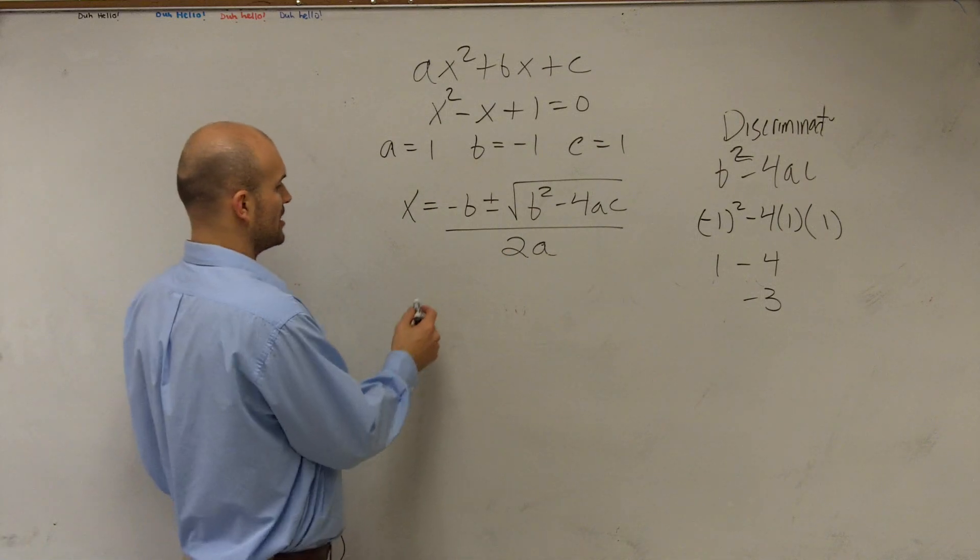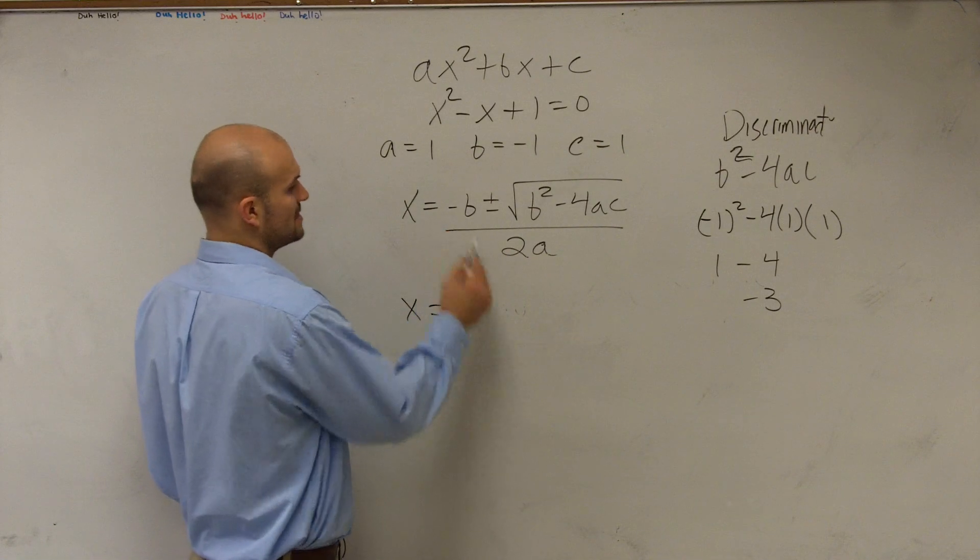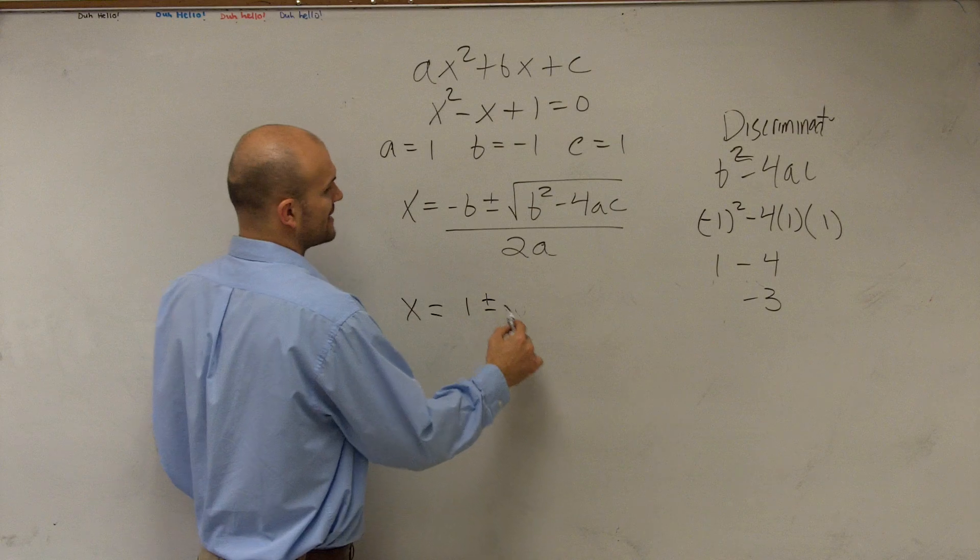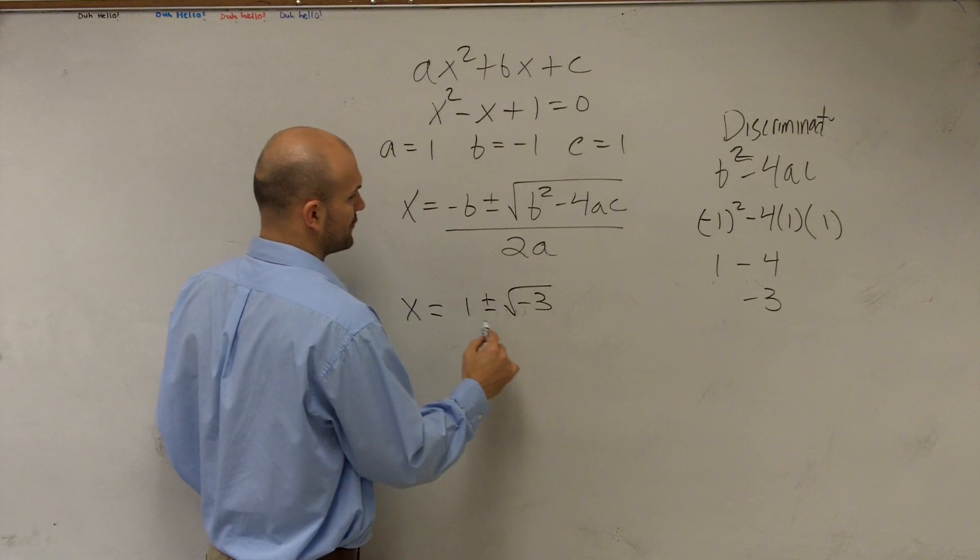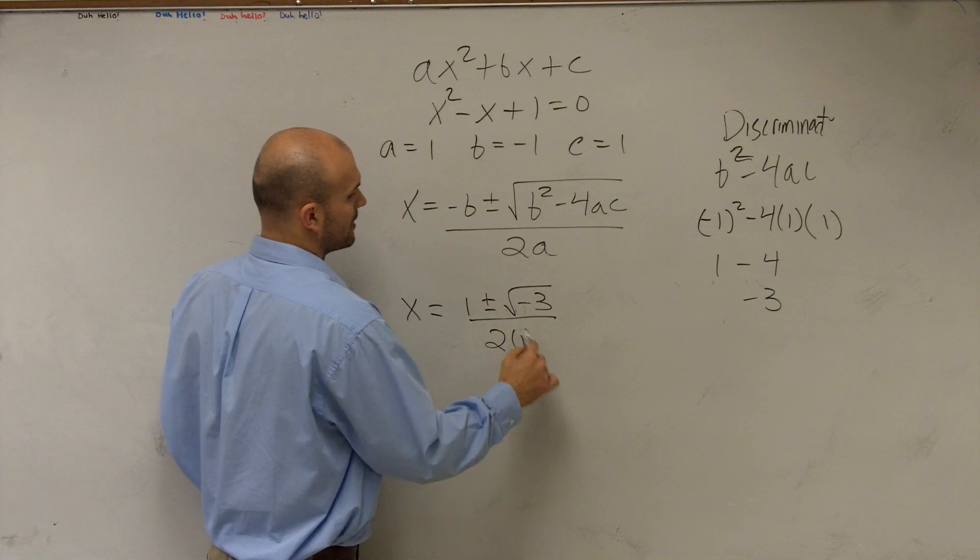So now, let's plug it in. So I have x equals opposite of b, which is 1, plus or minus the square root of negative 3 divided by 2 times 1.